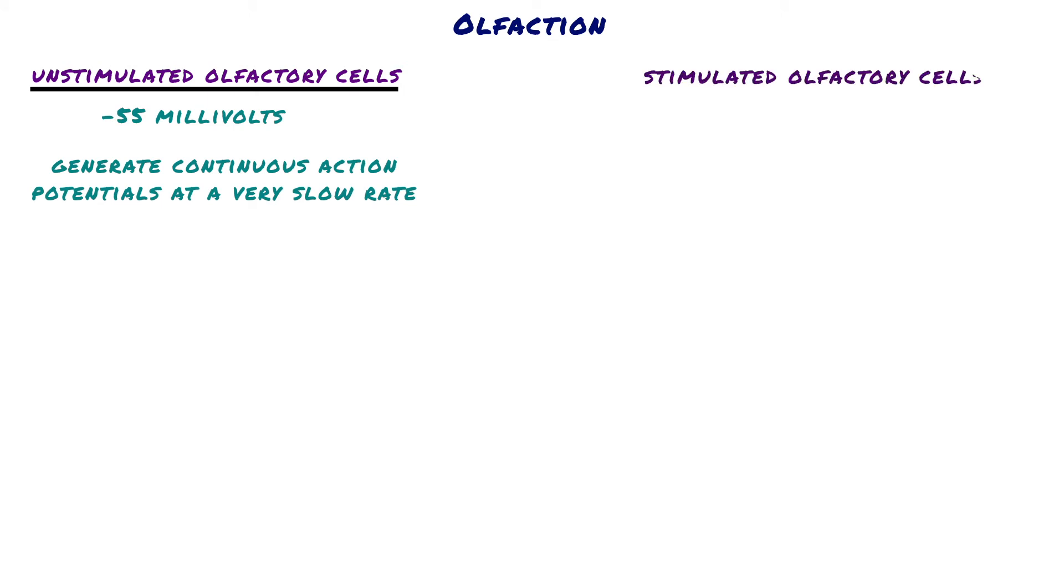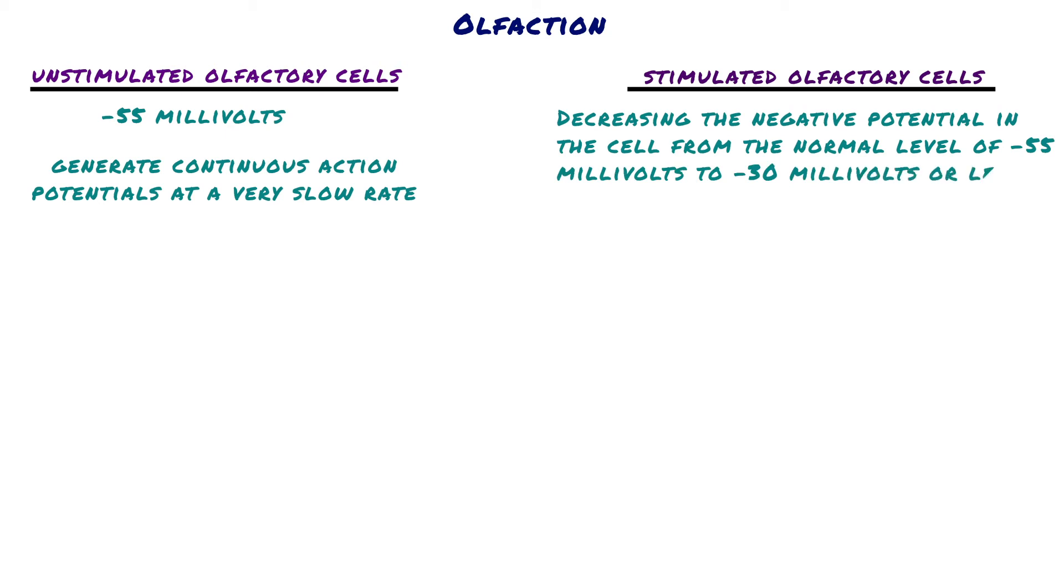Most odorants cause depolarization of the olfactory cell membrane, decreasing the negative potential in the cell from the normal level of negative 55 millivolts to negative 30 millivolts or less. That is, changing the voltage in the positive direction. Along with this, the number of action potentials increases to 20 or 30 per second.